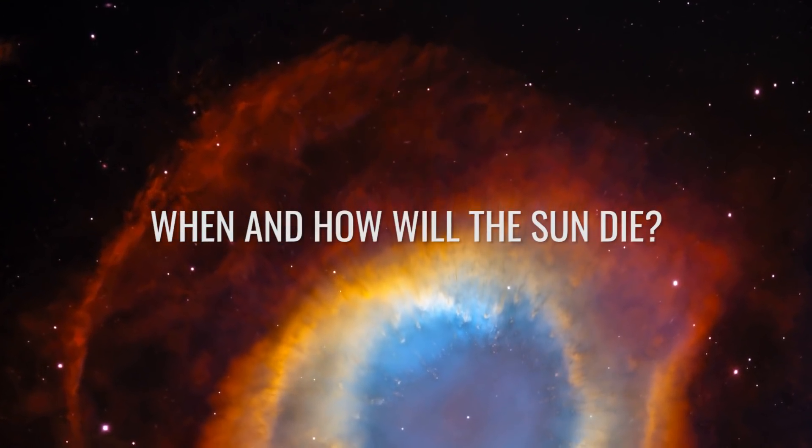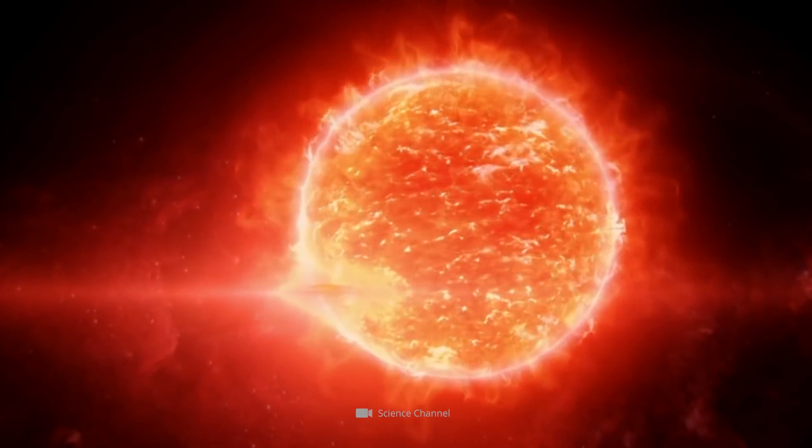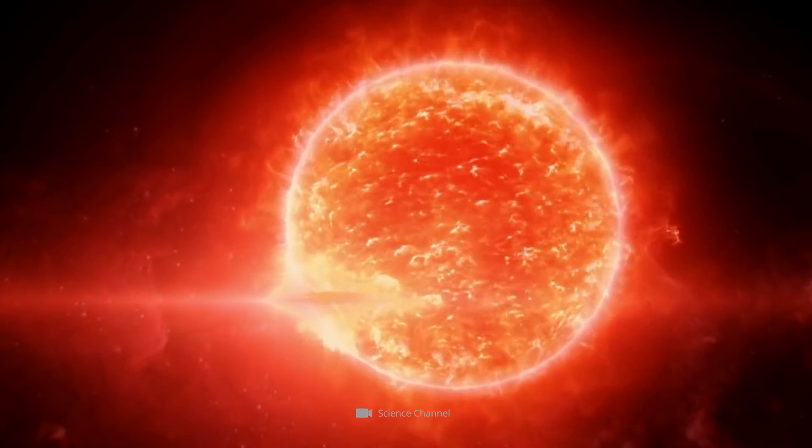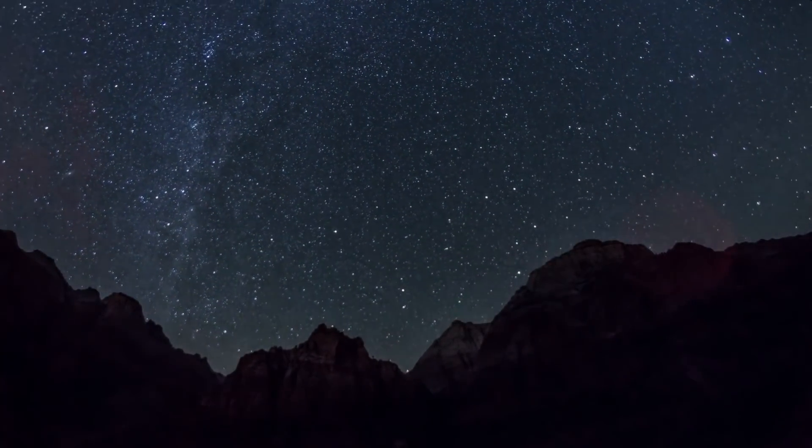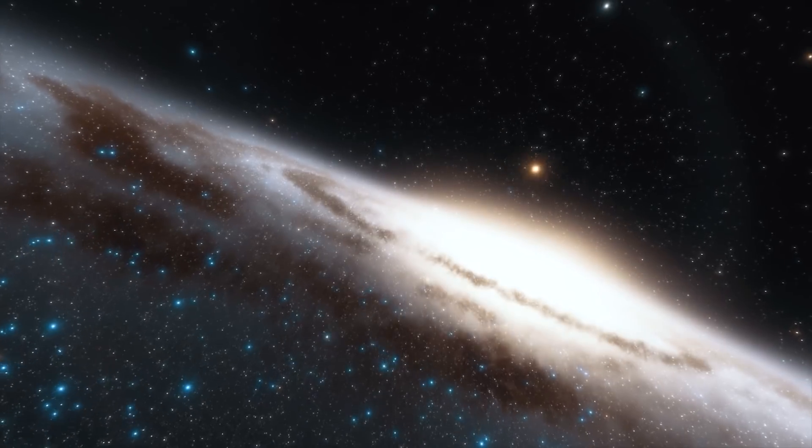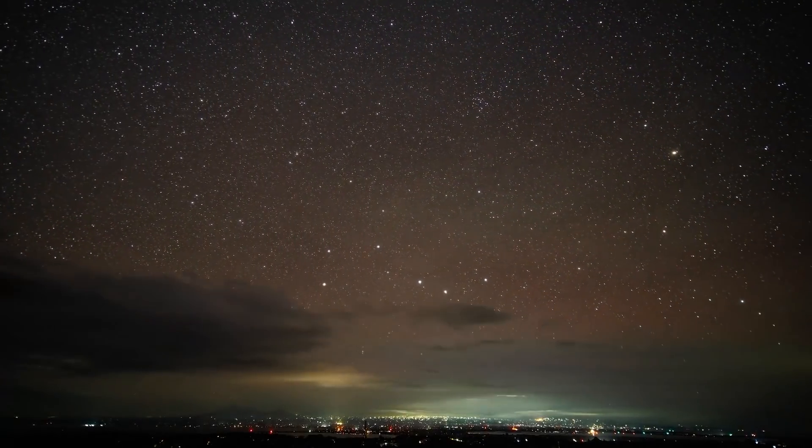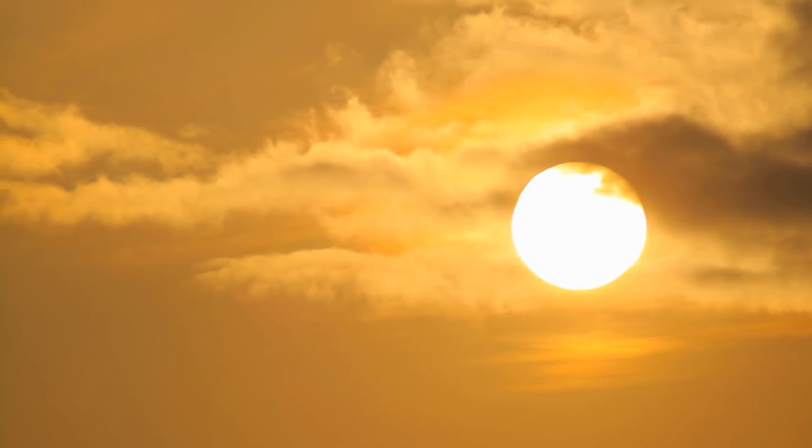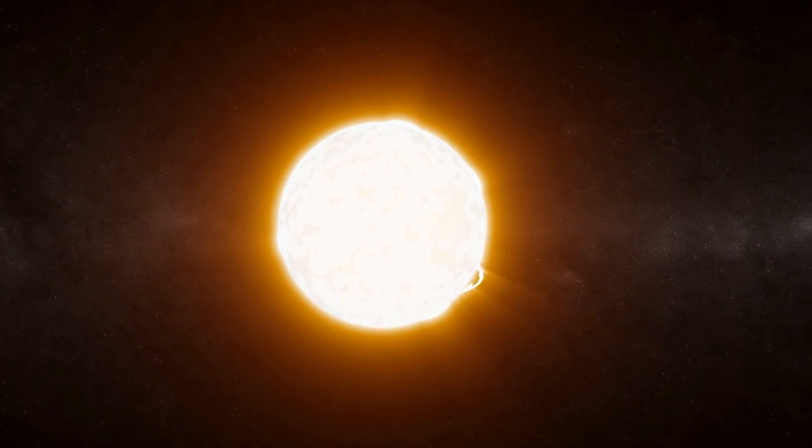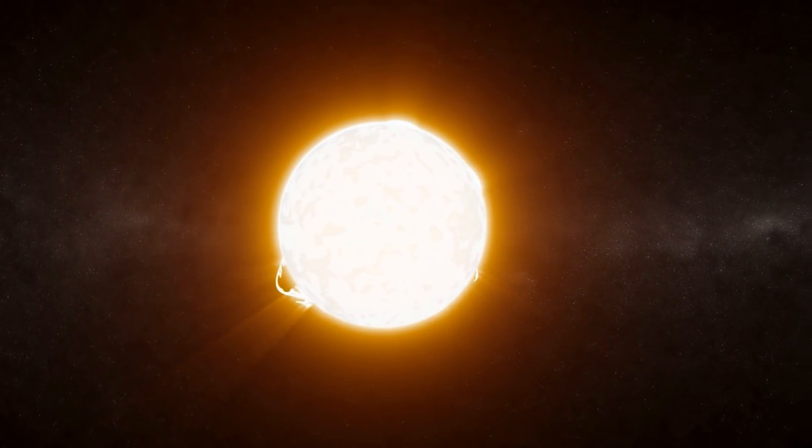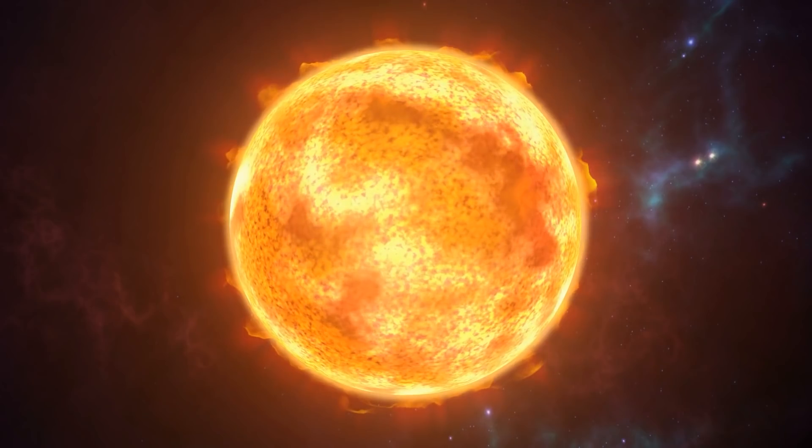While the red supergiant SN 2020 TLF has already passed the last phase of its evolution, we want to conclude today's video with the end of our sun. The final death of our central host star will not occur for trillions of years. The present phase of the sun, the so-called main sequence, will find its end in about 5 billion years.